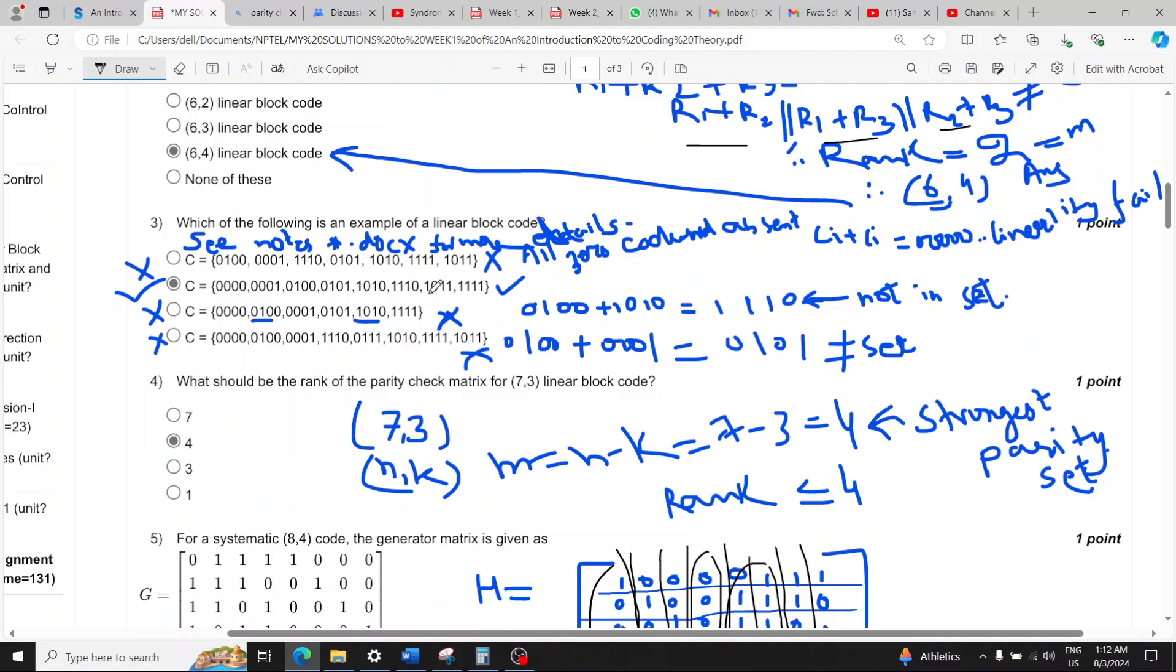Question three answer is option B. The reason being that when you add two code words it should also result in a code word. If you add the same code word to itself it should give a zero, but that is not the case here. There is no all zero code word so this does not work out.